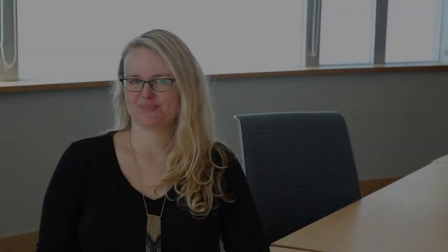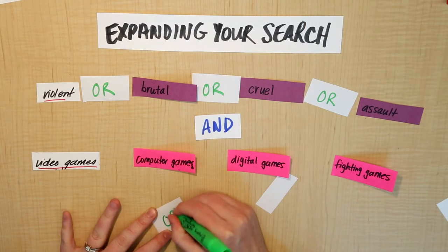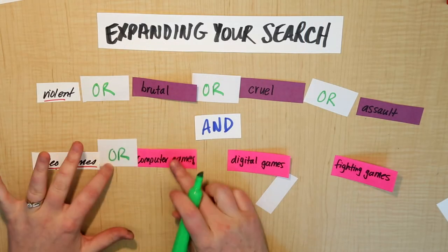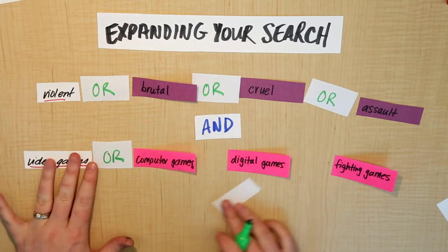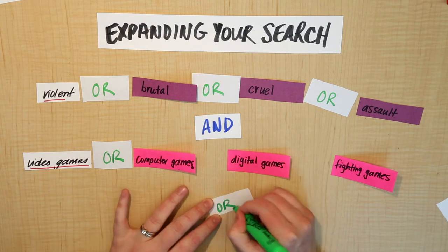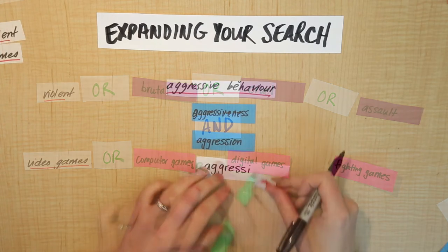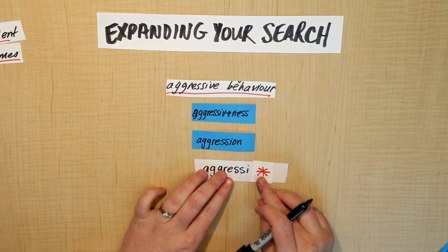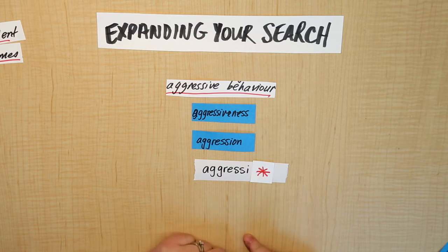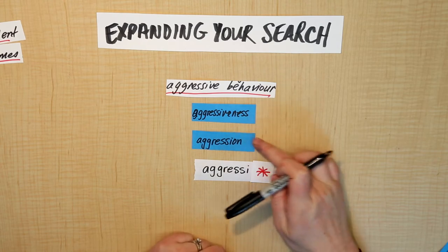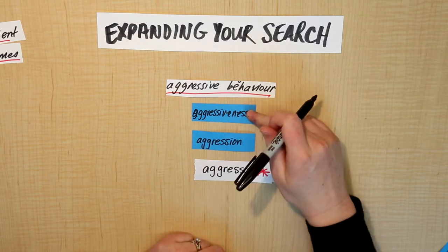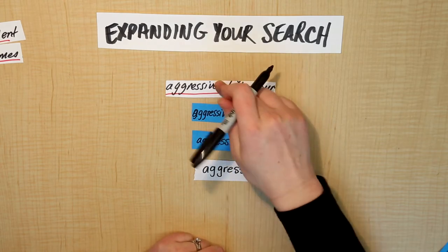From there, we took a look at two strategies for how to expand your results and get even more. The first strategy was by using the connecting words AND and OR. The second strategy was how to use truncation or wildcard searching with the star, or asterisk.